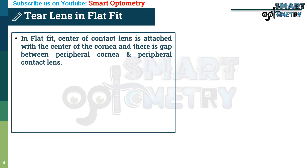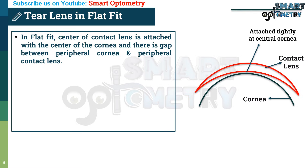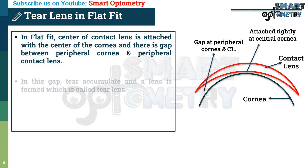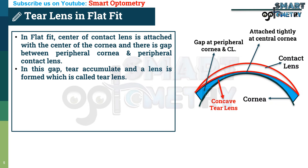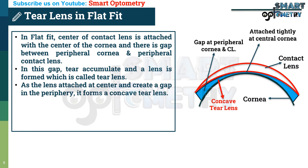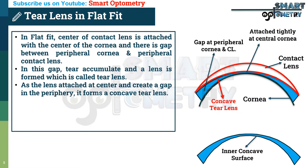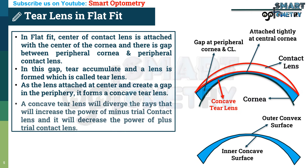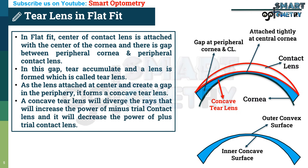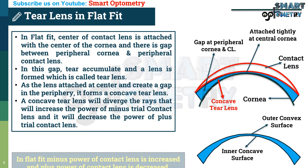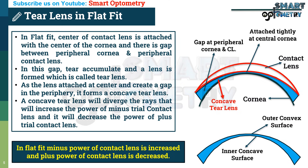In flat fit, the center of the contact lens is attached to the center of the cornea, and there is a gap between the peripheral anterior surface of the cornea and the peripheral posterior surface of the contact lens. In this gap, tear accumulates and a lens is formed called the tear lens. As the lens is attached at the center and creates a gap in the periphery, it forms a concave tear lens — precisely a convexo-concave tear lens, where the inner surface is concave (corneal side) and the outer surface is convex (contact lens side). A concave tear lens will diverge the rays, which increases the power of a minus trial contact lens and decreases the power of a plus trial contact lens. So in flat fit, minus power of contact lens is increased and plus power is decreased.